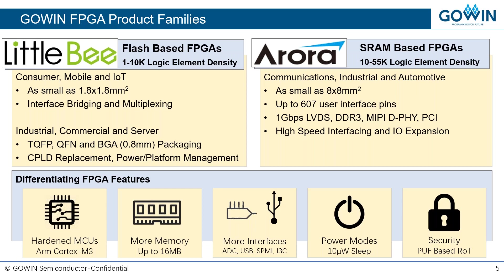We offer two product families: our LittleBee Flash-based FPGAs and our Aurora SRAM-based FPGAs. LittleBee's low-density products are targeted for mobile, consumer, and IoT applications such as bridging and multiplexing. They are also used in industrial, commercial, and server applications for CPLD replacement and power or platform management. The Aurora mid-density products are targeted for communication, industrial, and automotive applications with high-speed interfacing and IO expansion needs. Gowin is known as the innovative FPGA company. Key differentiating features include hardened embedded MCUs, embedded PSRAM or DRAM memory up to 16 megabytes, a vast offering of IO interfaces, low power operation as low as 10 microwatts in sleep mode, and embedded security offering root of trust capability, authentication, encryption and decryption, and secure cloud connectivity.